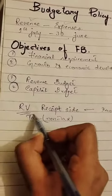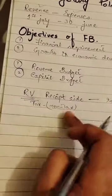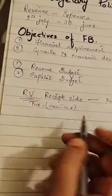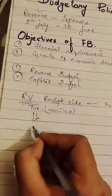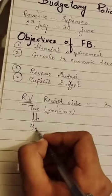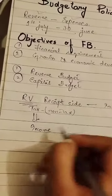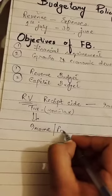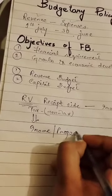Tax revenue is where people pay income tax, property tax, and other taxes on what they have and earn.